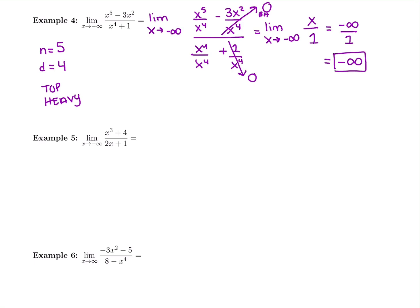See if you can try the next one — see what case it is. Feel free to pause the video and come back. We're first going to compare degrees. The degree of the top is 3. The highest power of x in the bottom is just a regular x, so it's to the first power. Another top-heavy example. We need to figure out what to divide every single term by — it's always x to the highest power in the denominator, so for this one it's just a regular x.